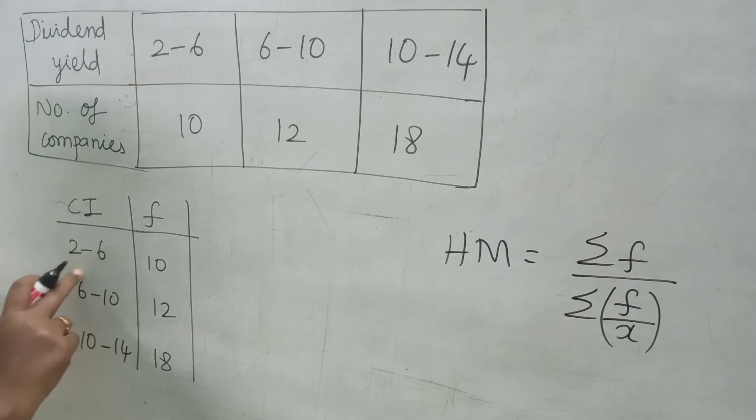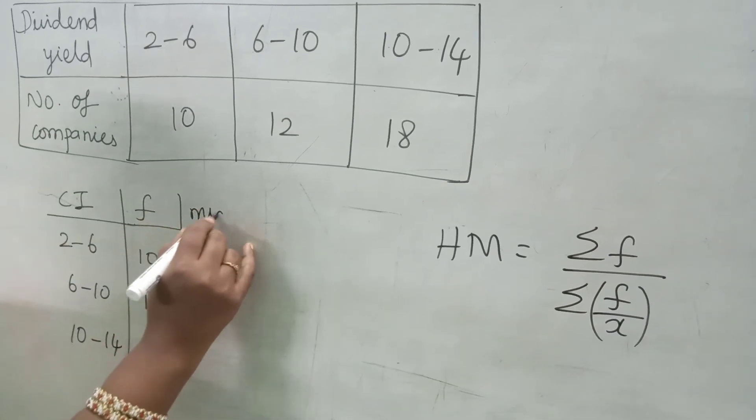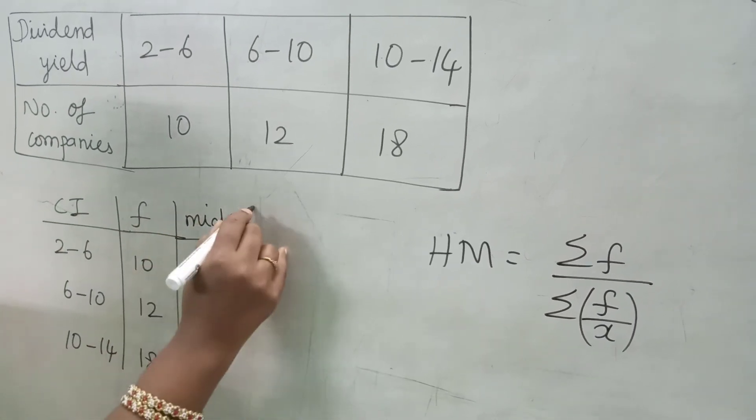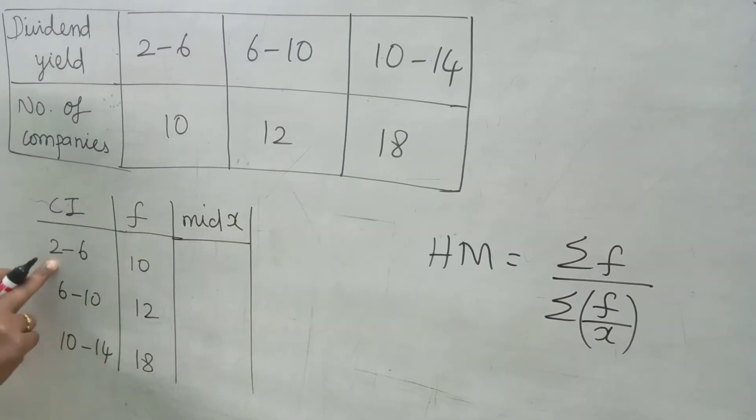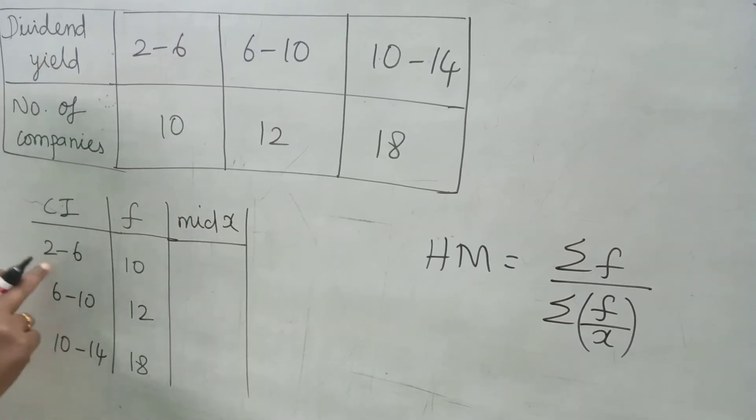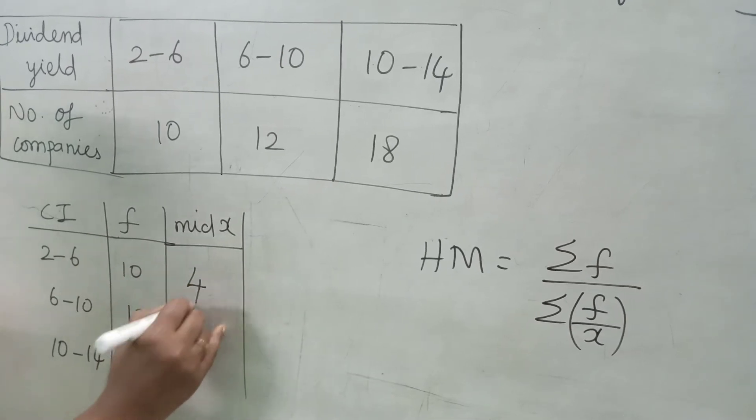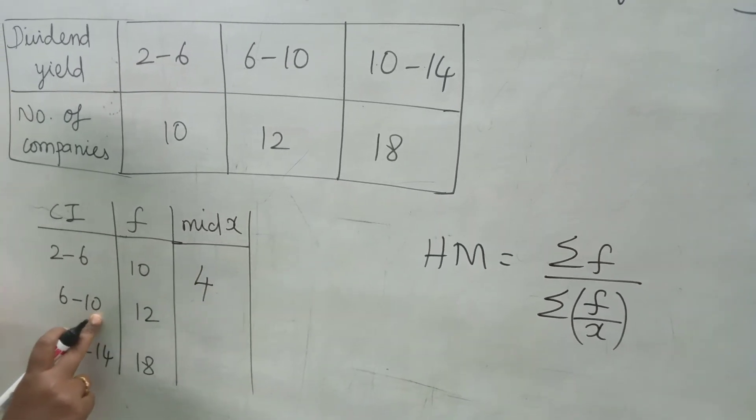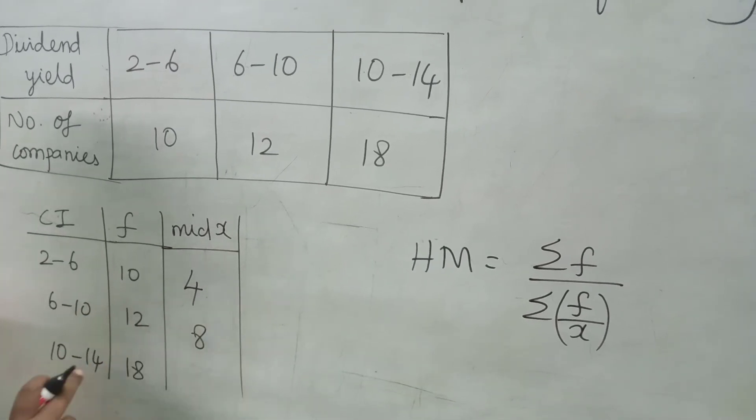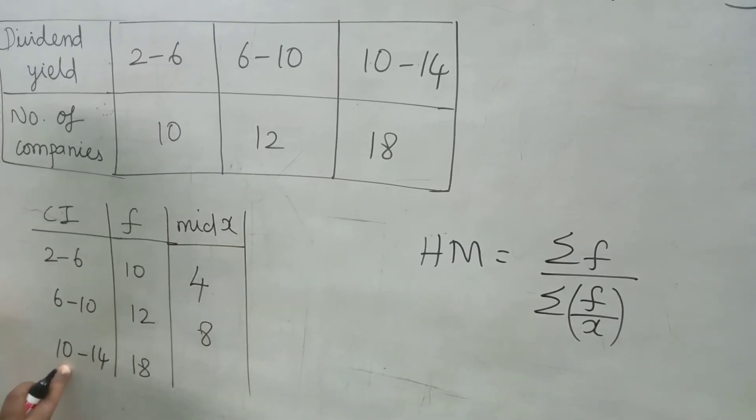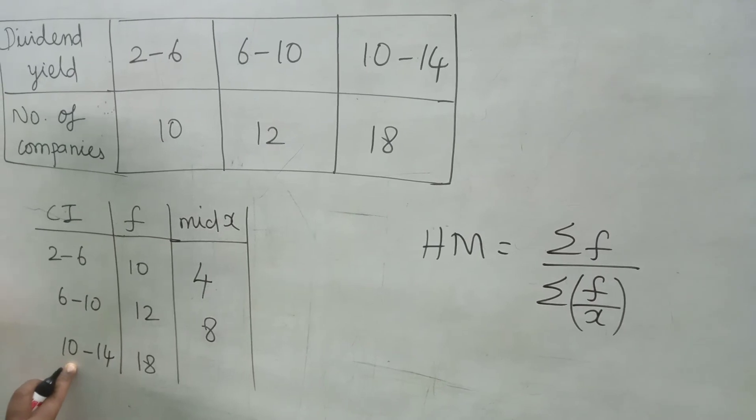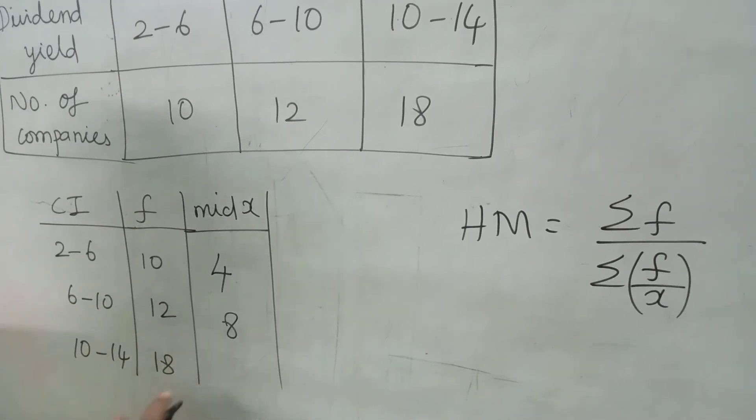In class interval, we have to find mid-X value. Mid-X means nothing but average of lower and upper limit. 2 plus 6, that is 8. 8 divided by 2, that is 4. 6 plus 10 is 16. 16 divided by 2 is 8. 14 plus 10 is 24. 24 divided by 2, that is 12.